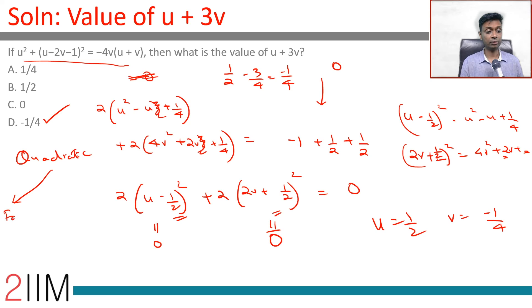First one is factorizing. Second one is completion of squares. One of these two will come of use generally. If you cannot factorize look to complete the squares.